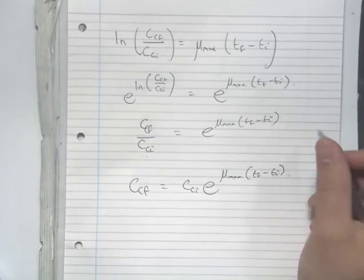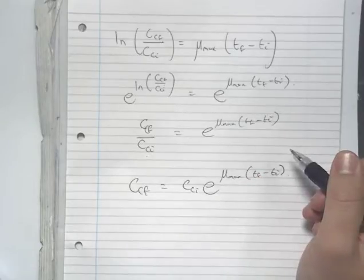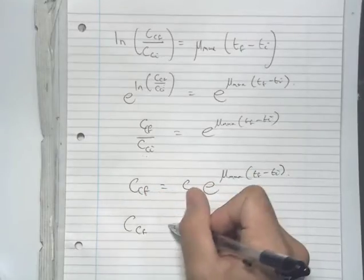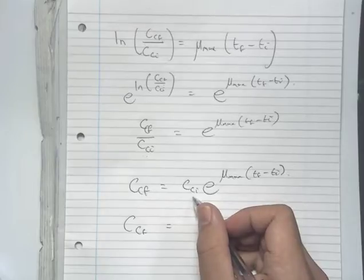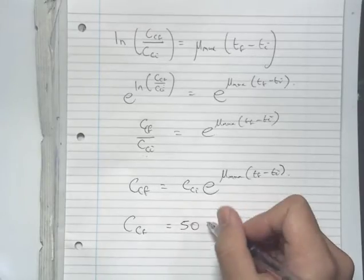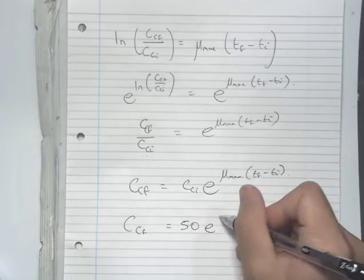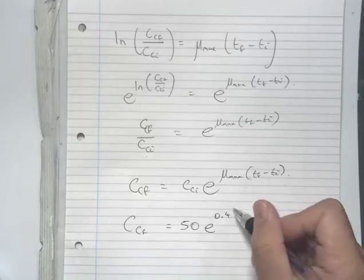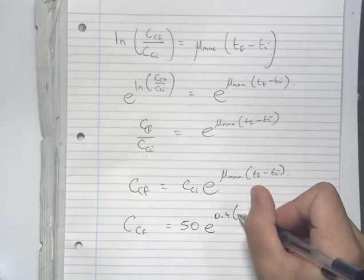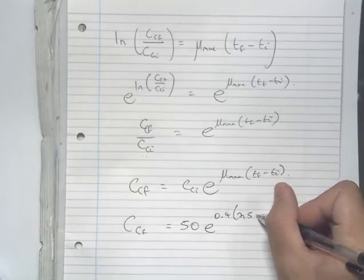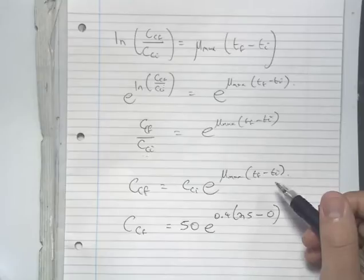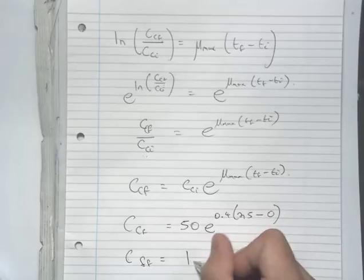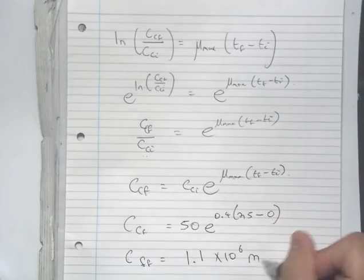As the question asks for the concentration after 25 days, we can substitute our values in. Our final concentration is equal to our initial concentration of 50 mg/L, times e to the power of 0.4 (the maximum specific growth rate) times 25 days, minus 0. When we calculate this through, we get our final concentration to be 1.1 times 10⁶ mg/L.